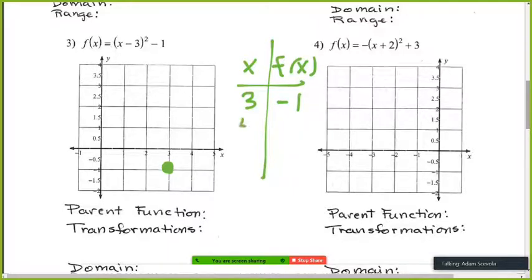Now let me plug in like four, all right? Plug in points near the vertex. So that would be four minus three squared minus one. So that's equal to zero. So we have the point four comma zero.